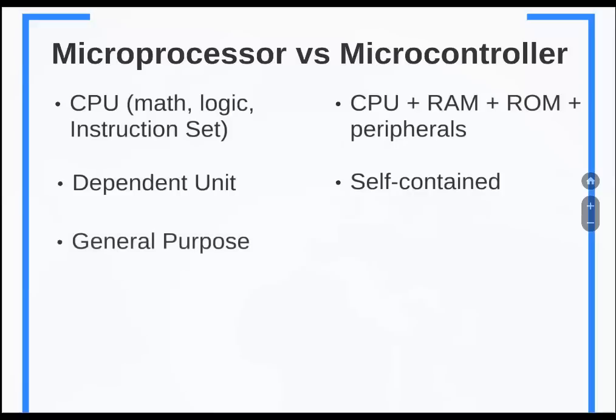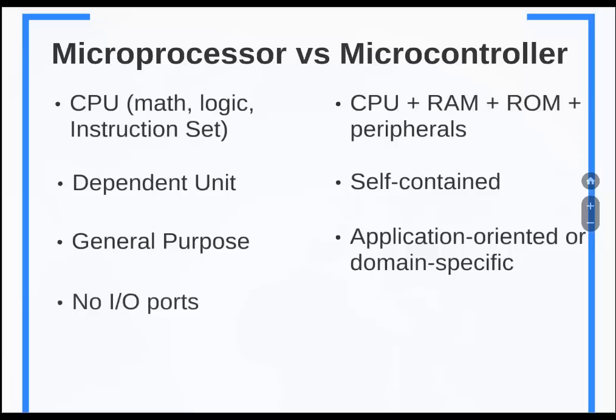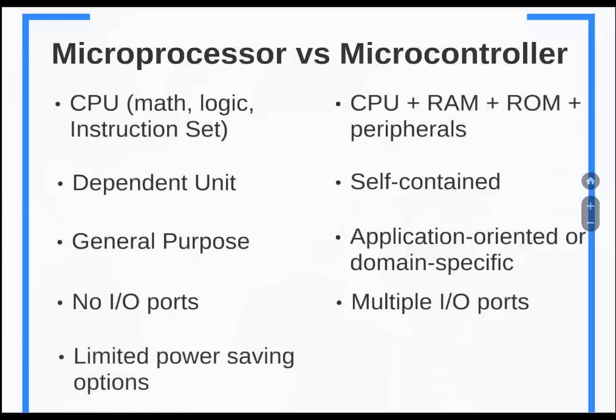A microprocessor is general purpose so it can be used for a variety of different applications. Whereas a microcontroller is generally application oriented, designed for a specific application with peripherals optimized for that particular domain. The microprocessor will not have any IO ports whereas a microcontroller always has multiple IO ports. In a microprocessor you've got limited power saving options, whereas on a microcontroller there are lots of power saving features.